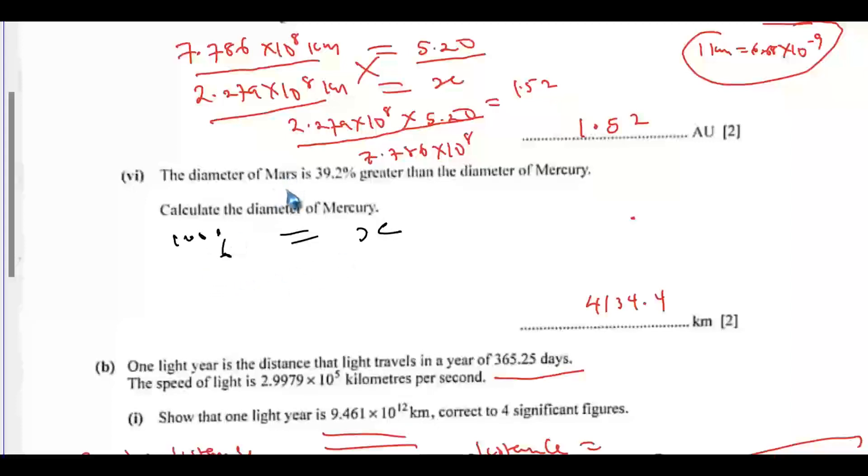But we are told that the diameter of Mars is 39.2% greater than the diameter of mercury. So, the diameter of mercury is given at 6,800. The implication is that it will be 100 plus 39.2, which is 139.2%. We need to find the diameter of mercury by cross-multiplying.